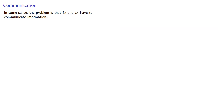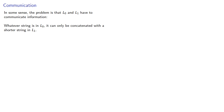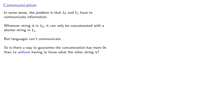In some sense, the problem is that the two languages have to communicate information. Whatever string is in L0, it can only be concatenated with a shorter string in L1. But languages can't communicate. So, is there a way to guarantee the concatenation has more zeros than ones without having to know what the other string is?